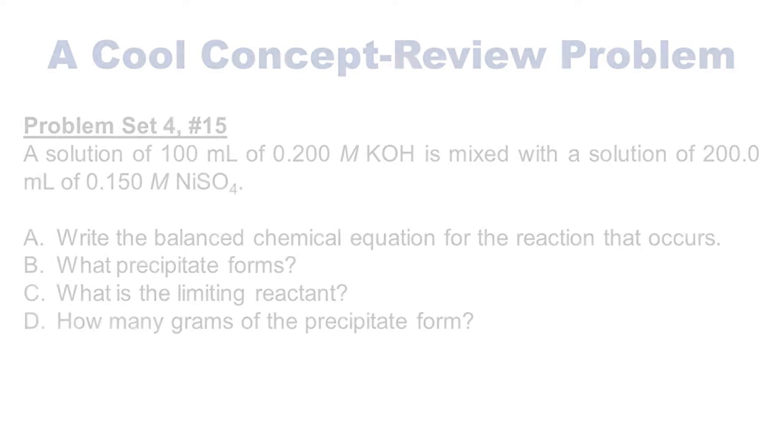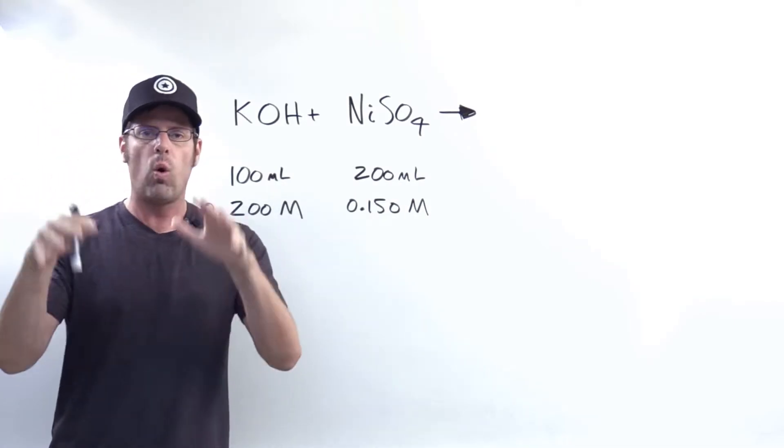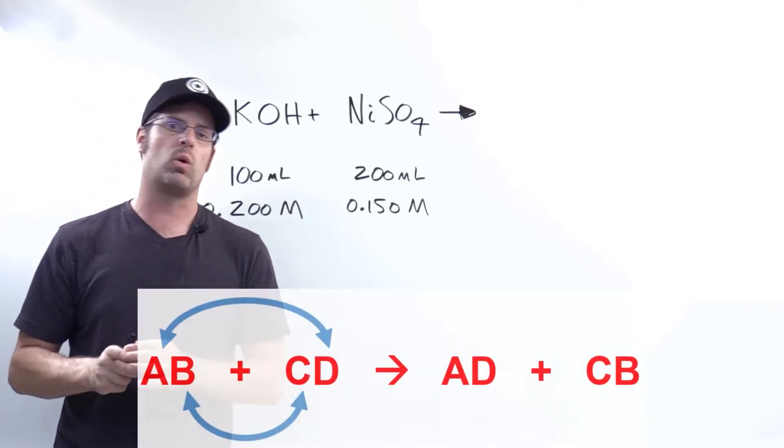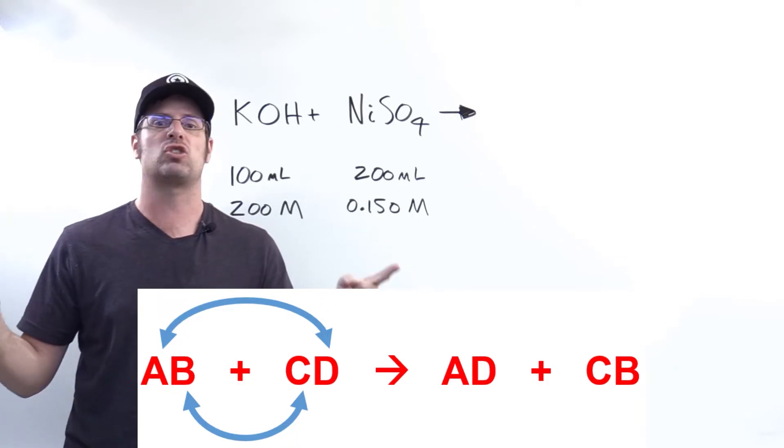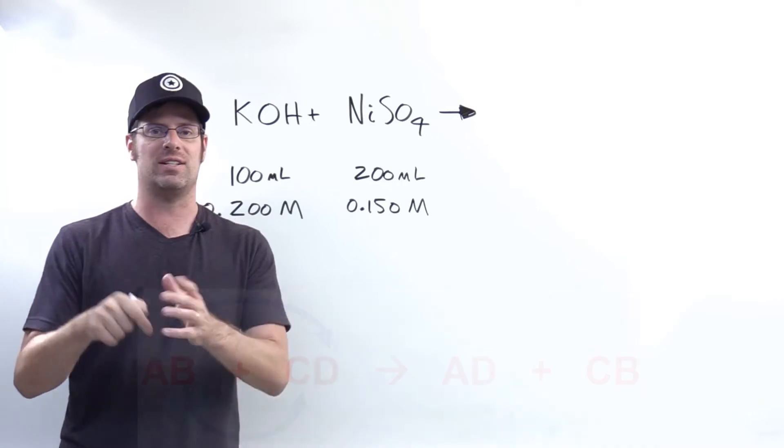As we've learned in our precipitation videos, the general format we want to follow for our reactants is a partner swap, where we have reactant AB being combined with reactant CD and then they just swap partners. A going with D and B going with C, cation to anion.